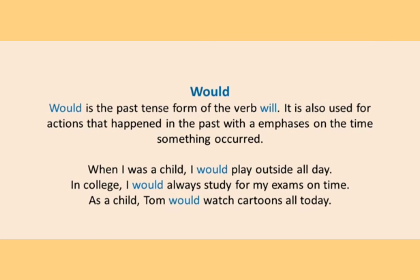Now let us talk about 'would'. 'Would' is the past tense form of the verb 'will' and it is used for actions that happened in the past, but here while using 'would' we need to emphasize on the time something occurred. Whereas 'used to' is used for an action that happened in the past and there we won't use any type of emphasis on time. But when we use 'would', you have to use it when you are describing an action that happened in the past and at the same time you have to emphasize on the time.